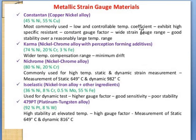Nichrome is commonly used for high-temperature static and dynamic strain measurement. For static measurement it can be used up to 649°C, and for dynamic loading up to 982°C. Isoelastic material is mainly used for dynamic tests — it has a high gauge factor and good sensitivity but poor stability. Platinum-tungsten (Pt-W) is used for elevated temperature applications.